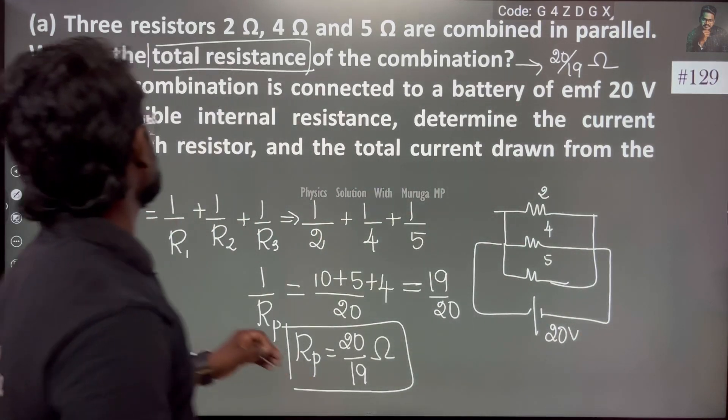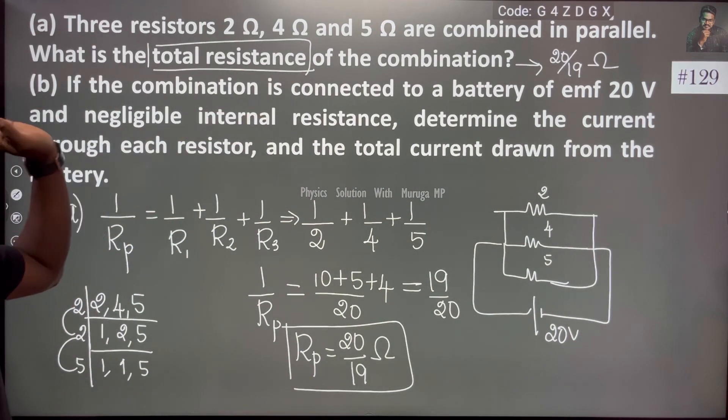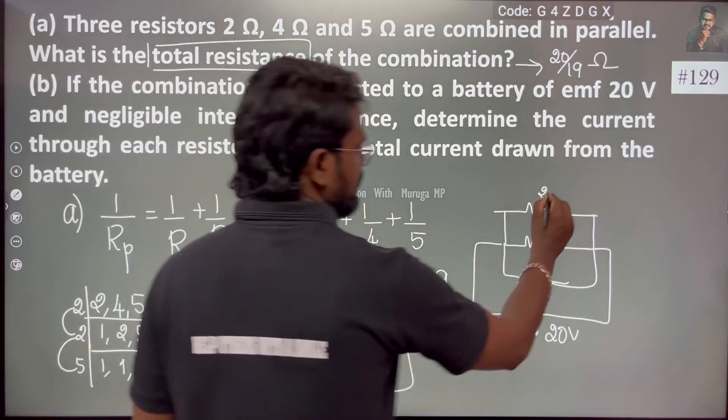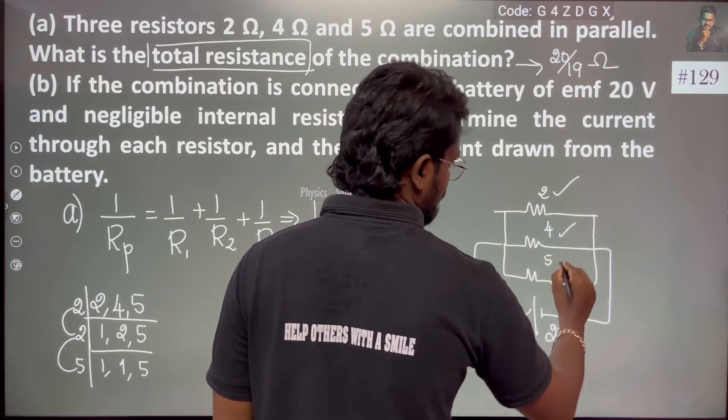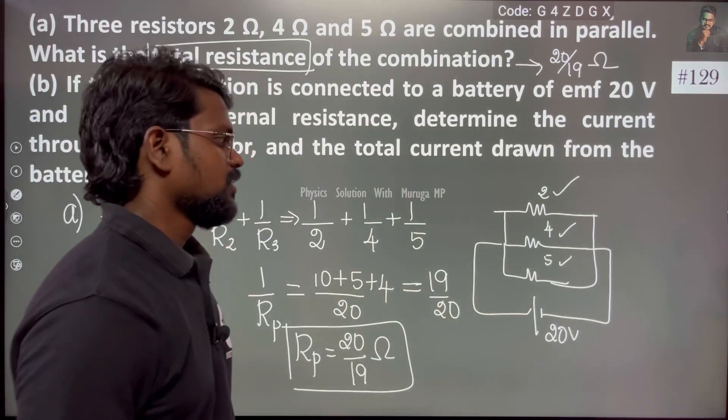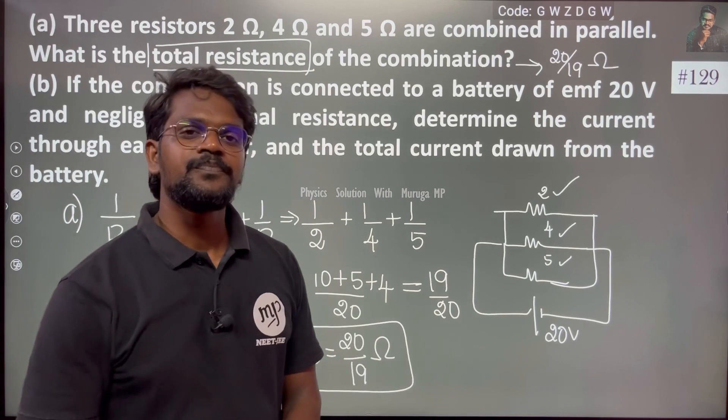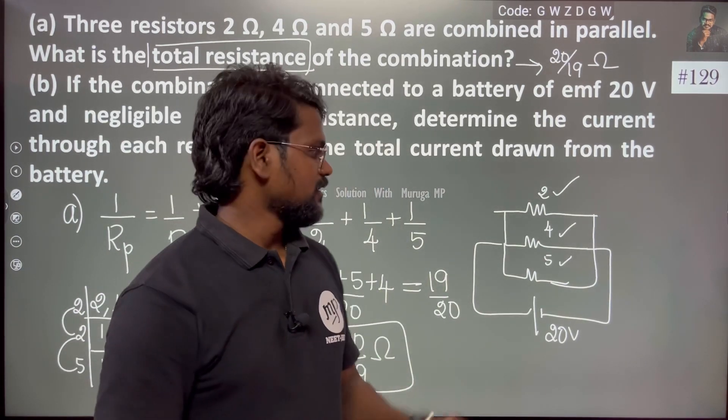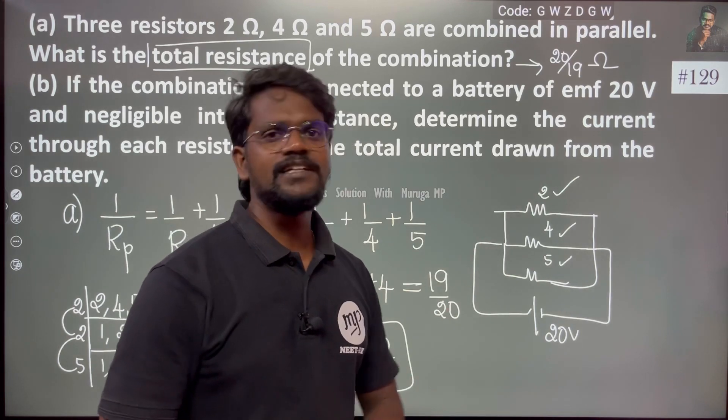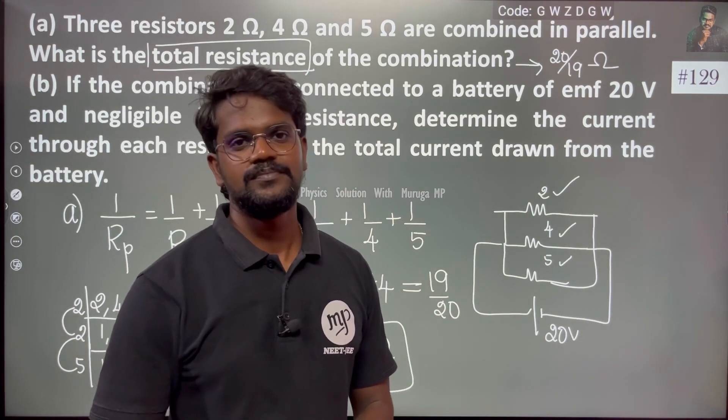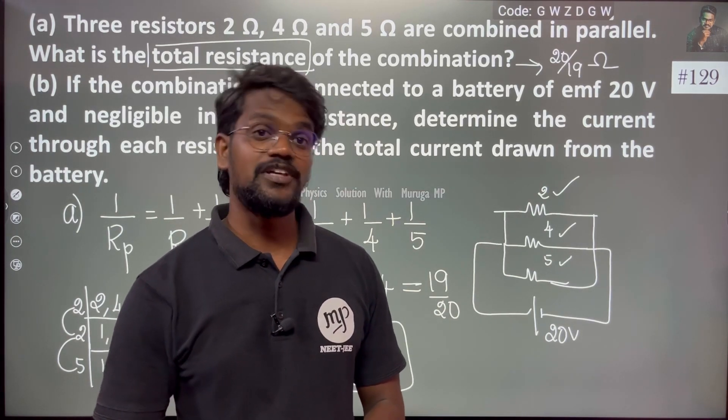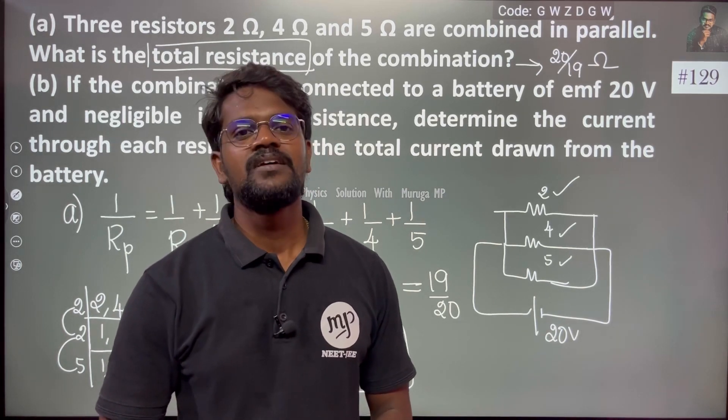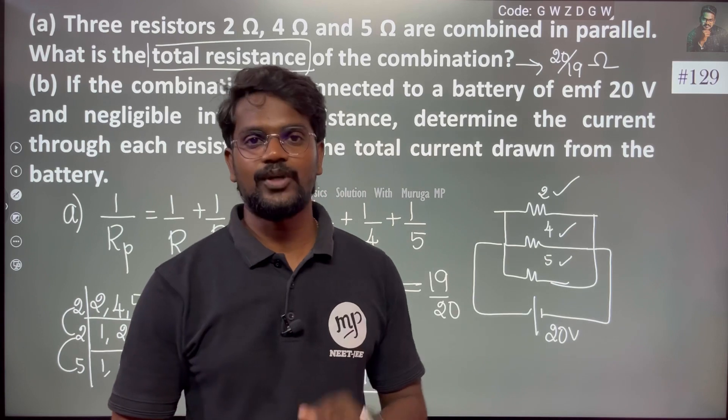Internal resistance is negligible. Current through each resistance - this is current, this is current, this is current. This is a parallel combination. In parallel, the voltage is the same. The current is different. In parallel, the voltage is same; in series, the current is same and the voltage is different.